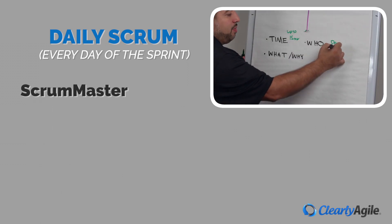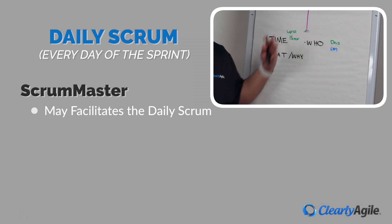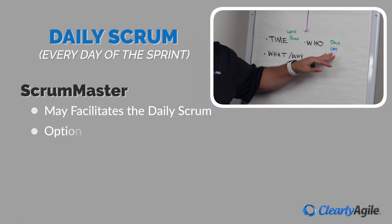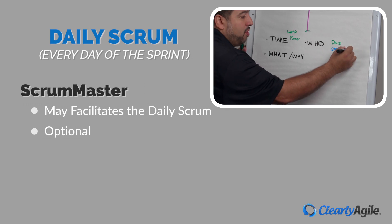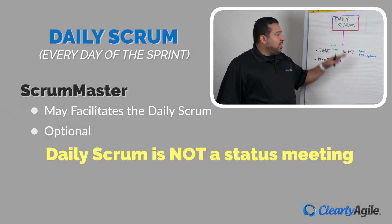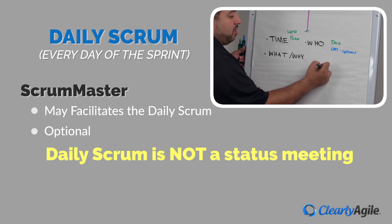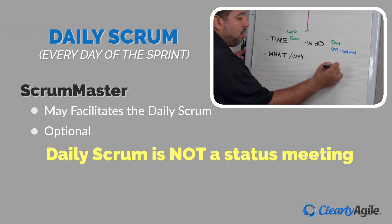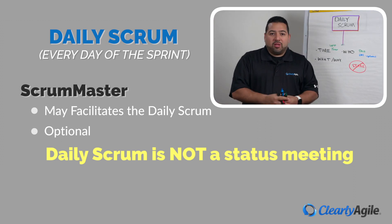We have within the Scrum team a Scrum Master. The Scrum Master typically would facilitate the daily Scrum, but the Scrum Master is optional. A lot of people don't realize this — they think that the daily Scrum is for the Scrum Master to get an update. The daily Scrum is not a status meeting. We're not here to talk about the status of all the items; we're here so the devs can sync up with each other.